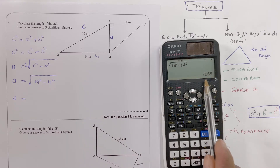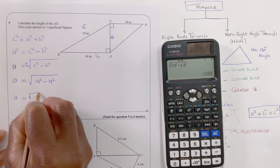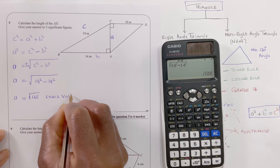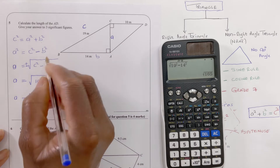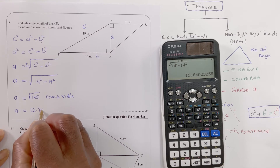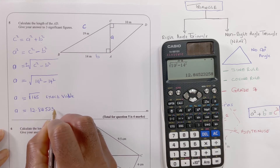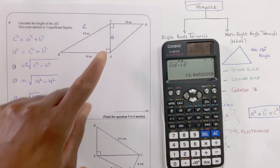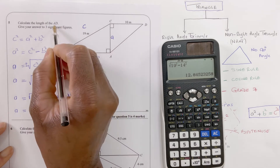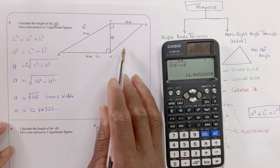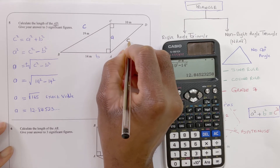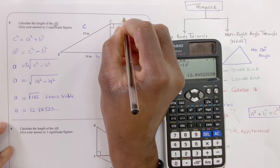The exact value is √165. To three significant figures I press standard to decimal, giving a equals 12.8452... I need to keep the exact value √165 to carry forward into the next calculation to find the final side. AB appears to be the longest side so I'll now call it C in the second triangle.